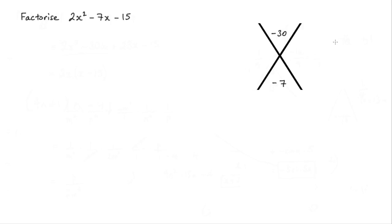So I'm looking at -10 multiplied by 3. When I multiply these together I get -30, and when I add them I get -7. Let's place one of these values here and the other one just here.